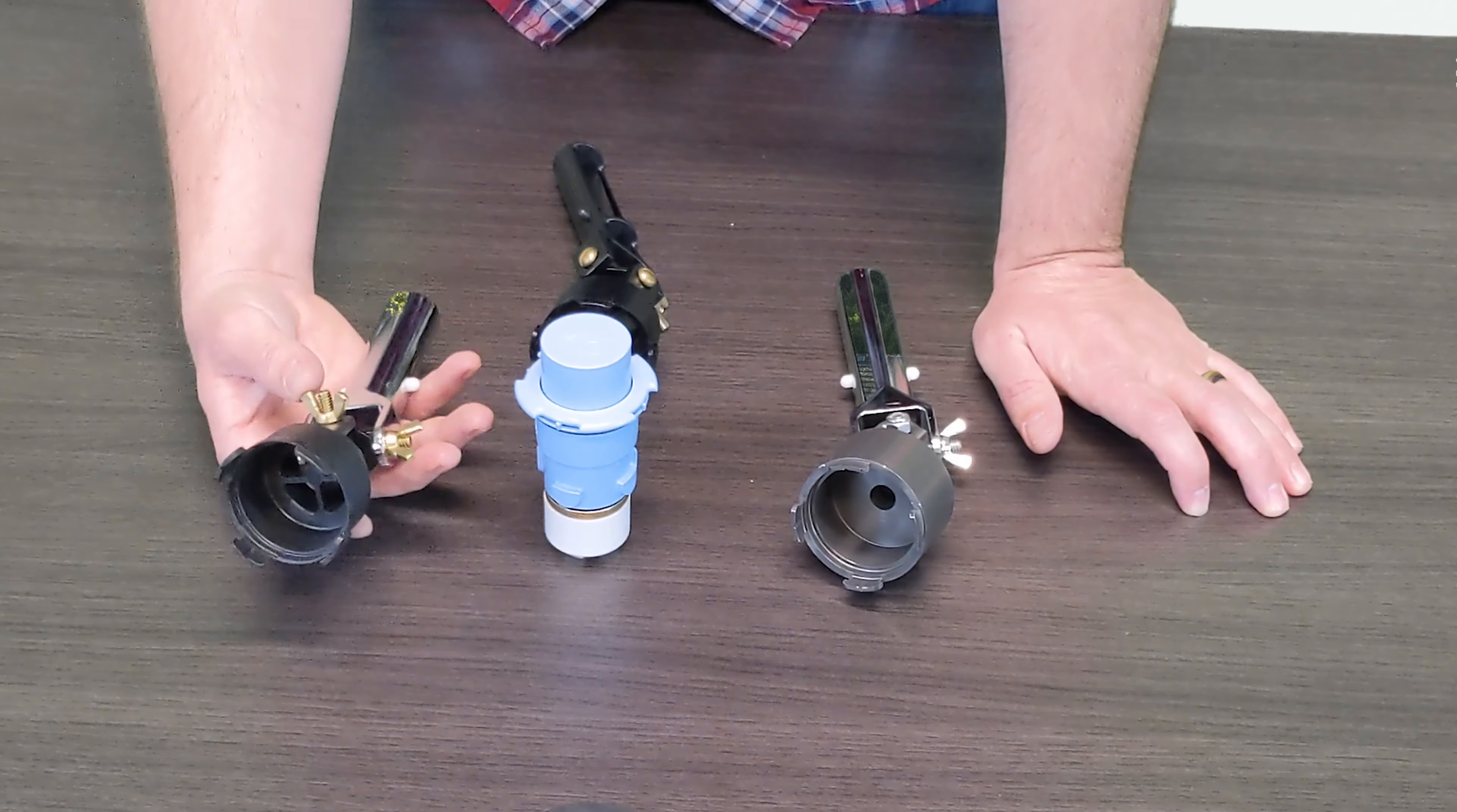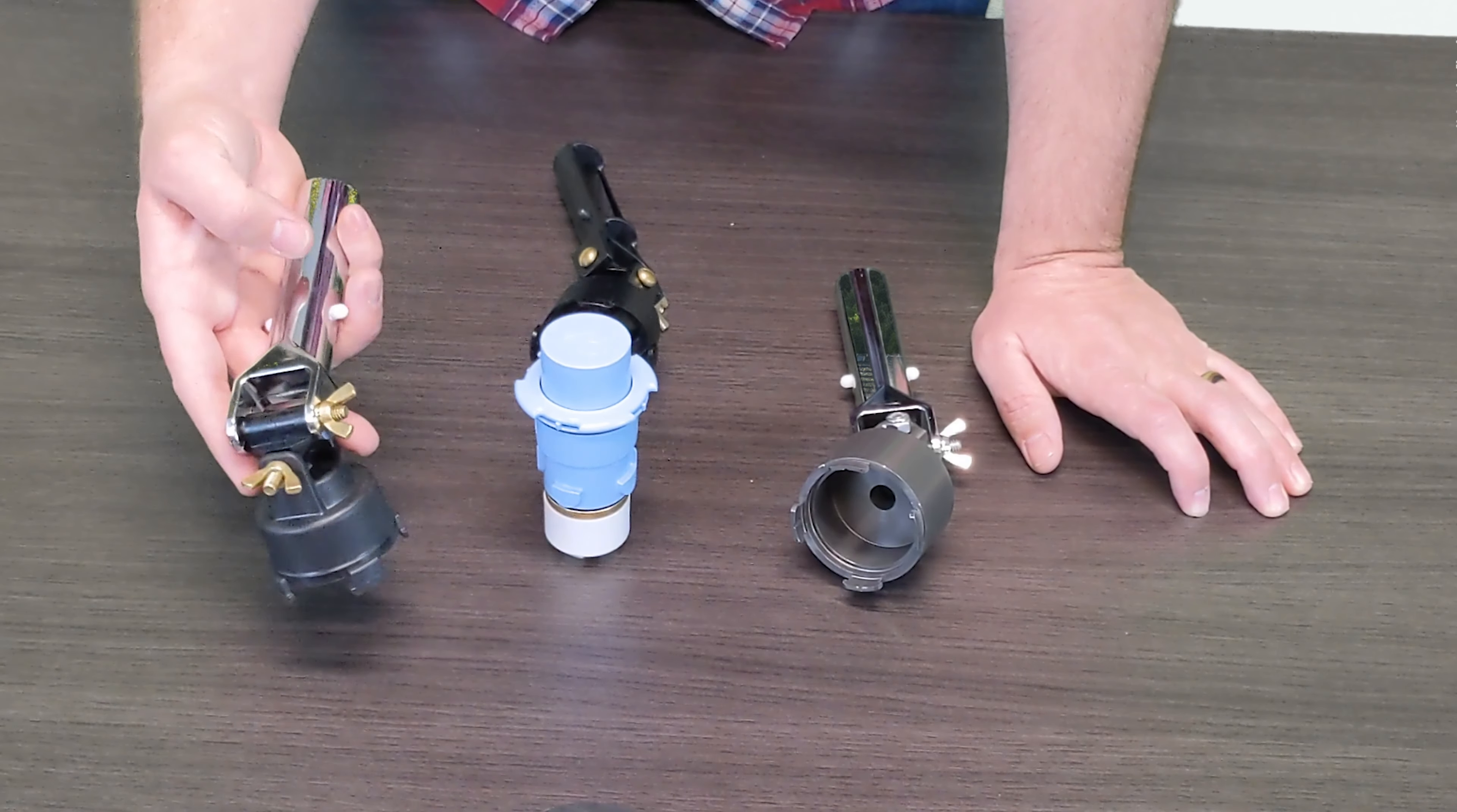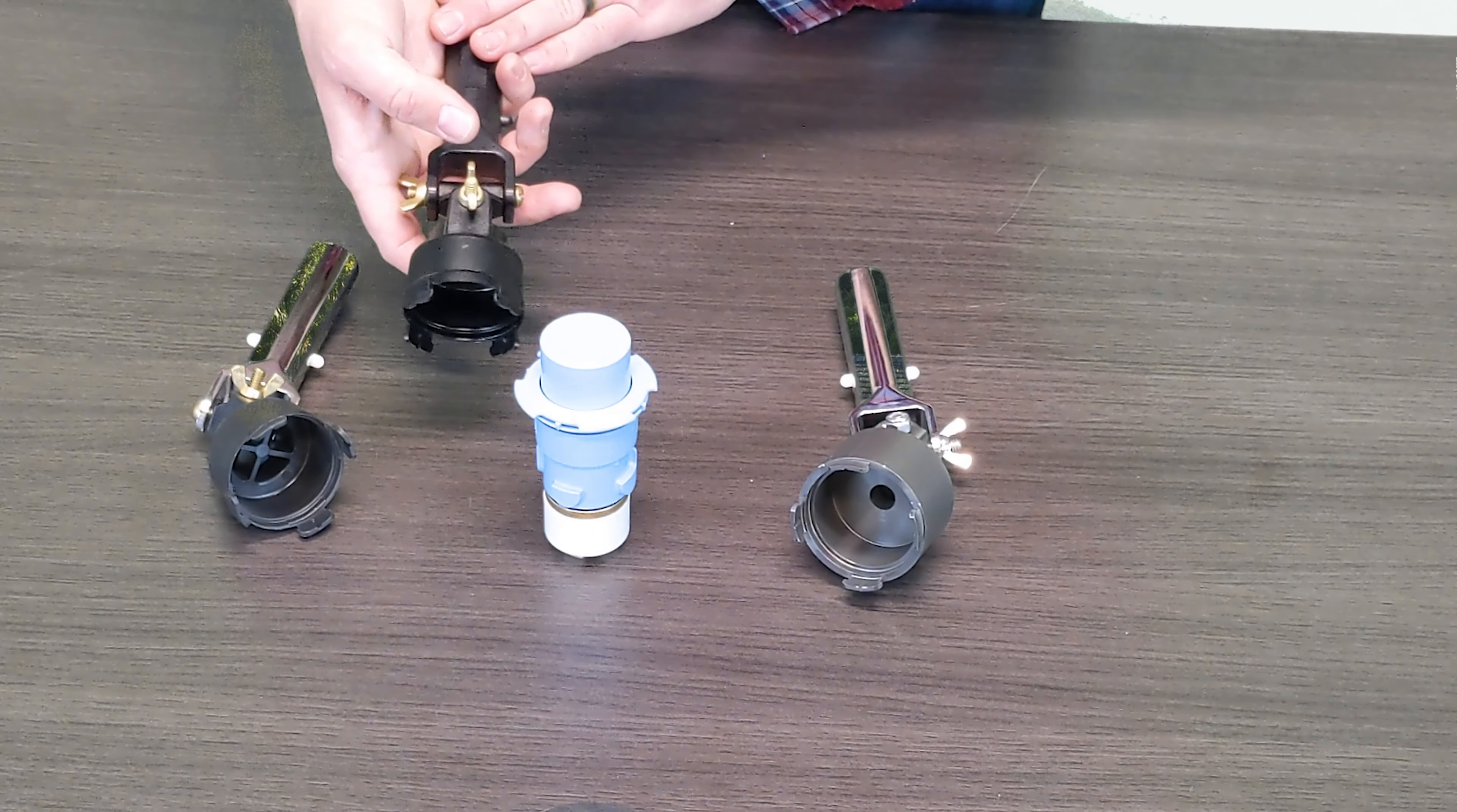So we actually have the combo that Paramount offers for the PV3 where it uses a plastic head with a plastic knuckle and then a very similar metal handle, and then they have their all-plastic version here where it's a plastic knuckle, plastic head and a plastic handle.